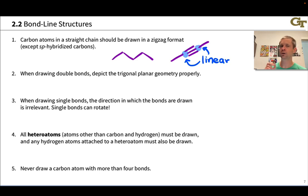When you draw double bonds, make sure to depict the trigonal planar geometry properly with a 120 degree bond angle. And this is natural if you're used to the zigzag format for single bonds. It's by convention, really, the same bond angle is used for double and single bonds, since they're pretty close. 109.5 and 120 degrees are pretty close. So we tend to pretty much draw them the same way, and that's fine in bond line structures.